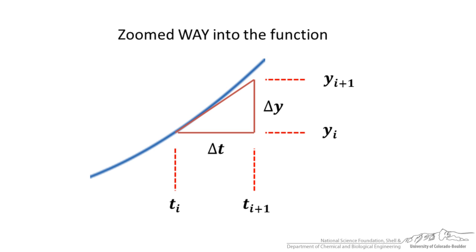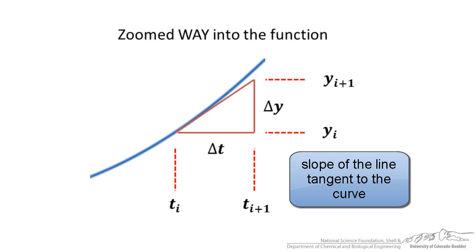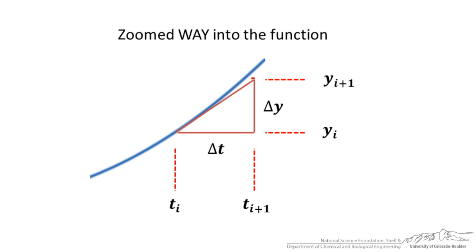If we zoom way into the function at any given time point and the next time point, we are estimating the slope as Δy/Δt, and as shown here we are going to be calculating this value because that value depends upon the current, so this is what we currently know, we are projecting the next value.